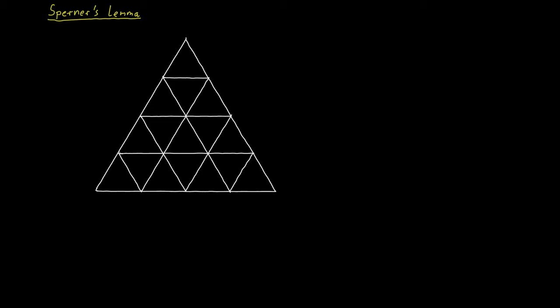Now, we are interested in the points where the lines meet. First of all, we have the three corners of the large triangle. Then we have these points that subdivide the three outer edges of the large triangle, like this.